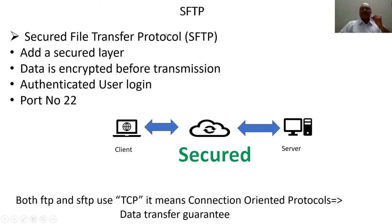In continuation to FTP, there is a new protocol called Secured File Transfer Protocol, or SFTP. The meaning of 'secured' is that a secure layer is incorporated before the transmission of data. The data being exchanged between the client and server is encrypted, so the encryption makes the data transmit in a secure manner so that no other process can view or change it. There is also an authentication mechanism incorporated in SFTP — the user must log in before the actual data transmission takes place.